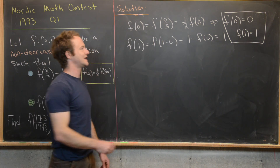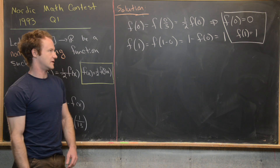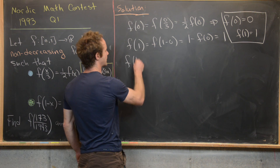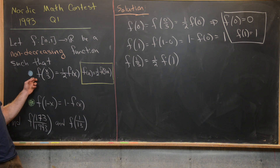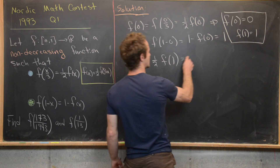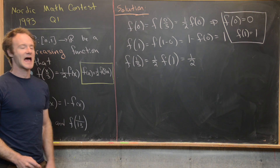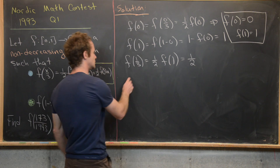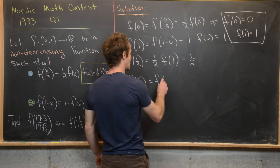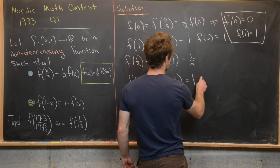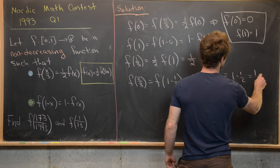We can also notice that f(1/2) = 1/2. Furthermore, f(1/3) = (1/2)f(1) = 1/2. Now using the hint that 1/2 = 1 − 1/2: f(2/3) = f(1 − 1/3) = 1 − f(1/3) = 1 − 1/2 = 1/2.